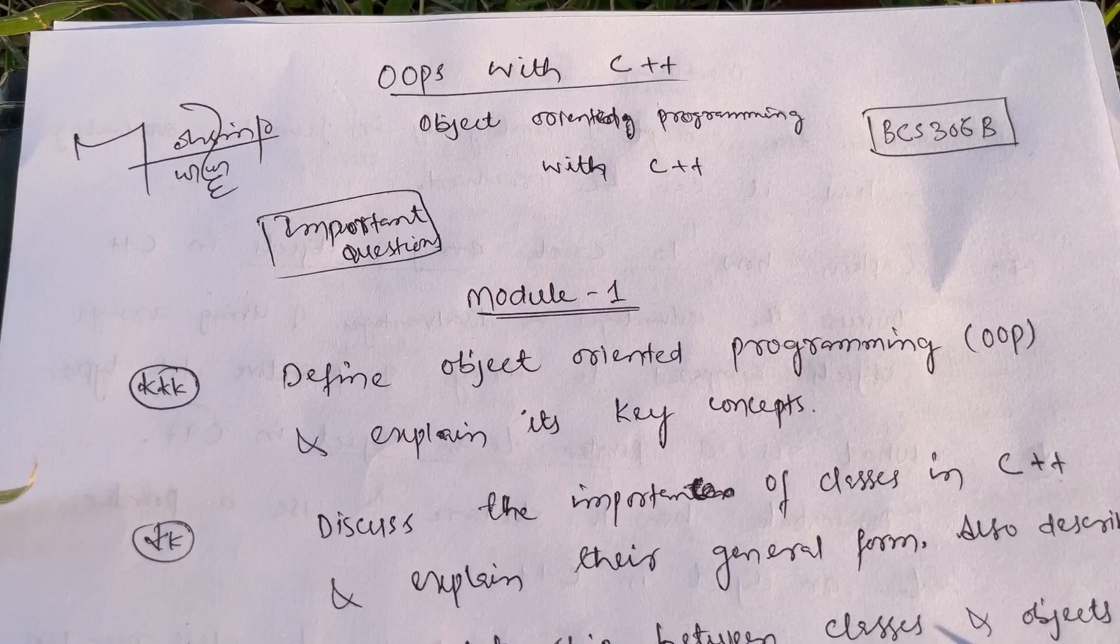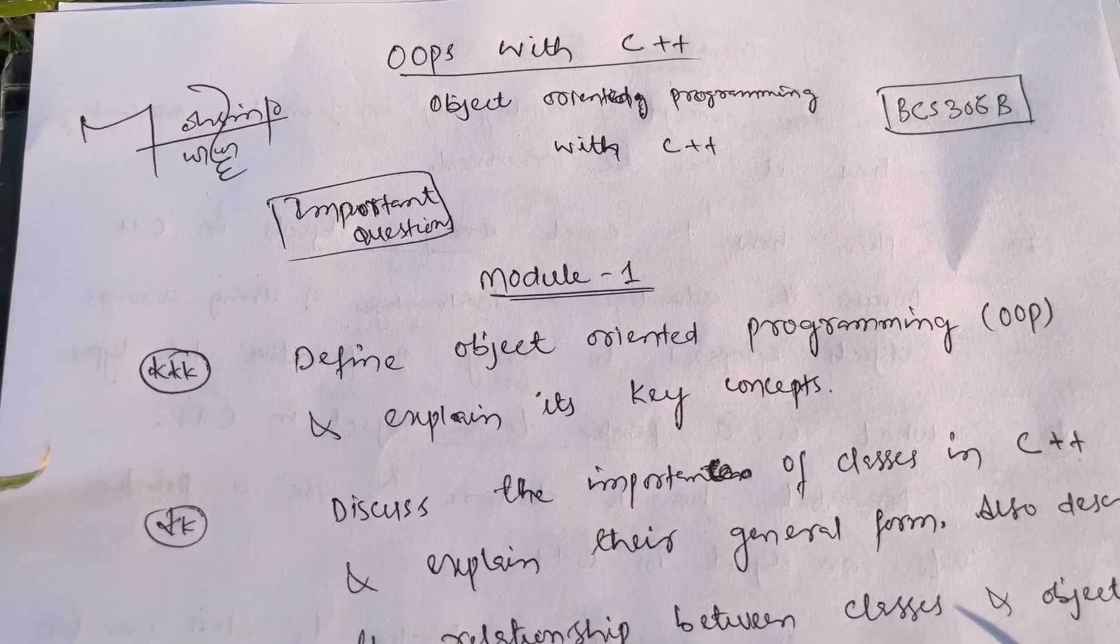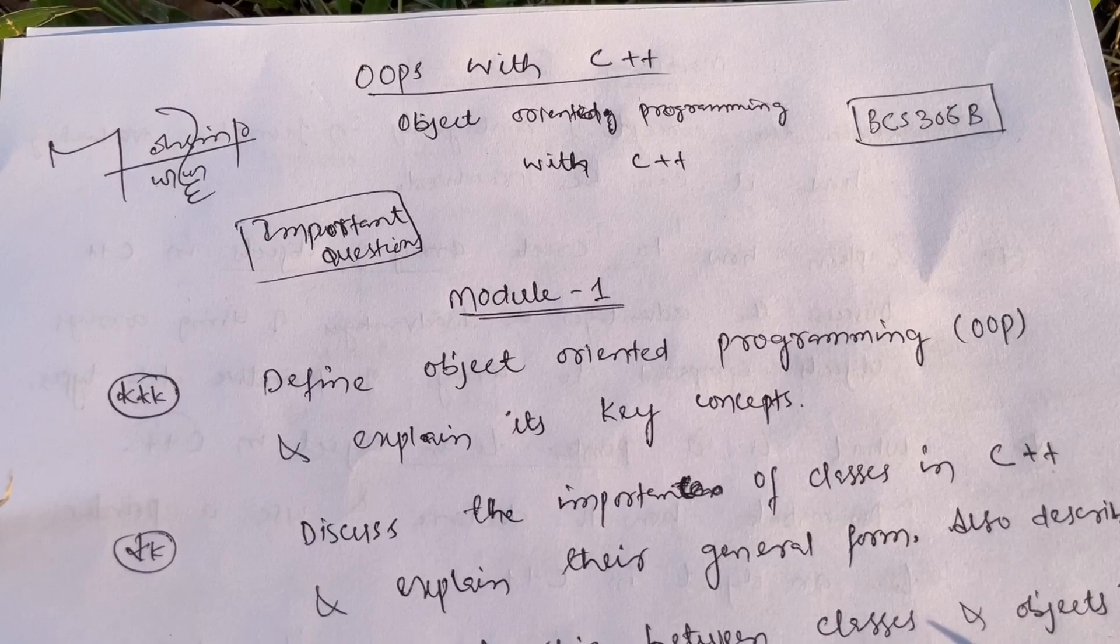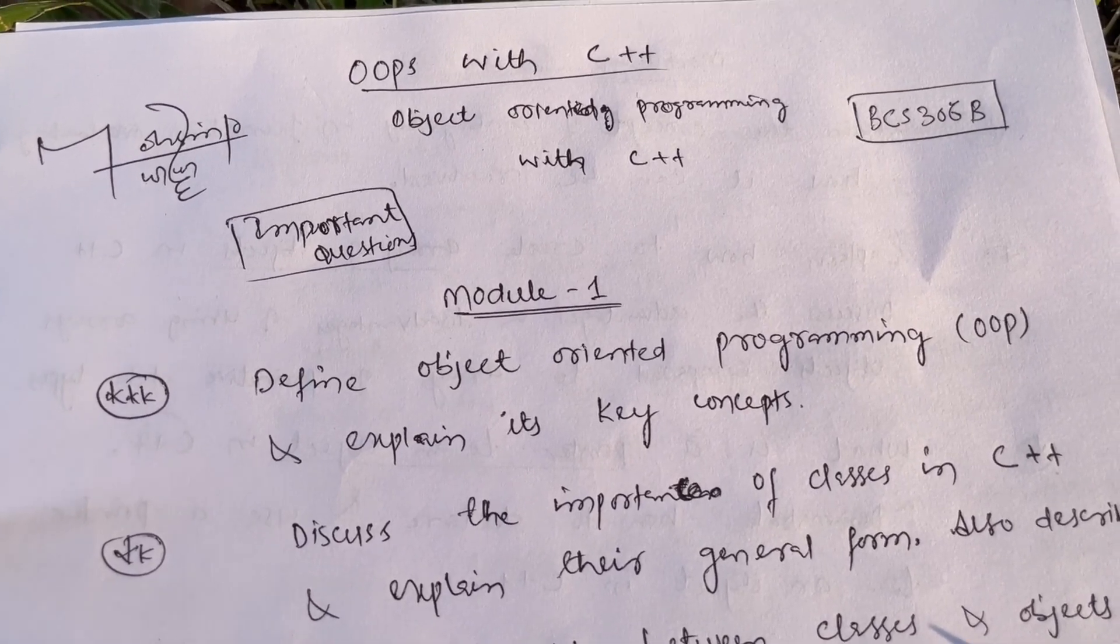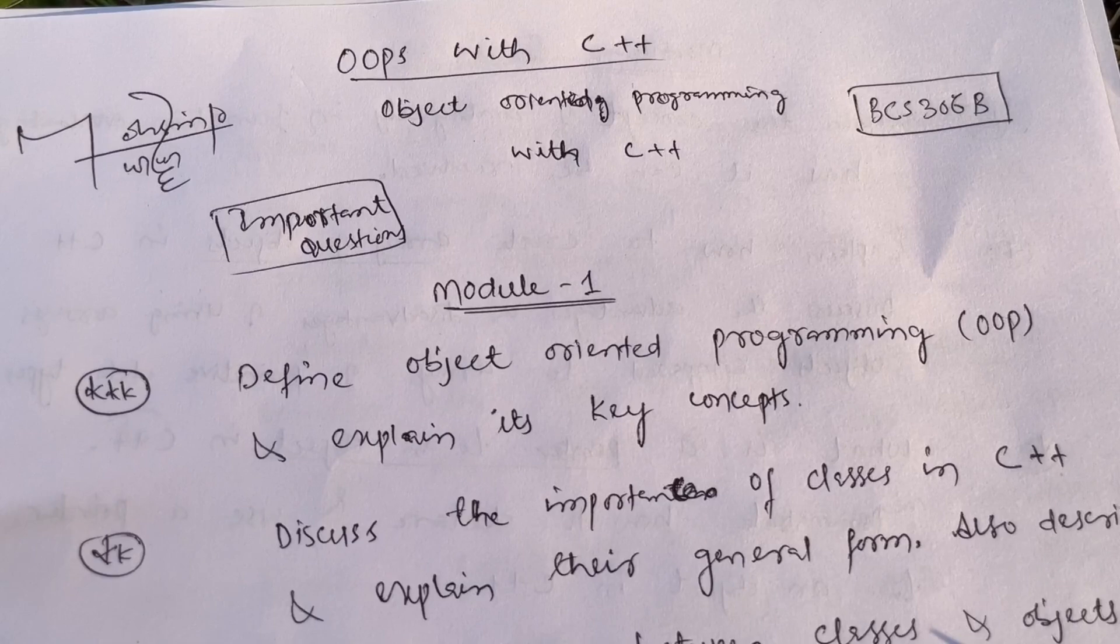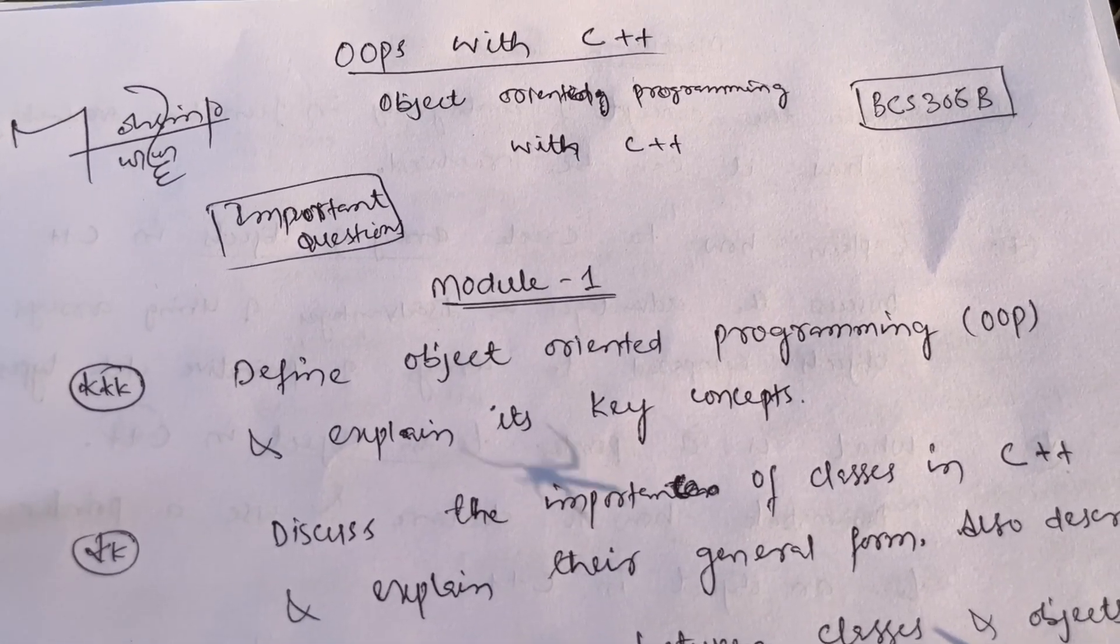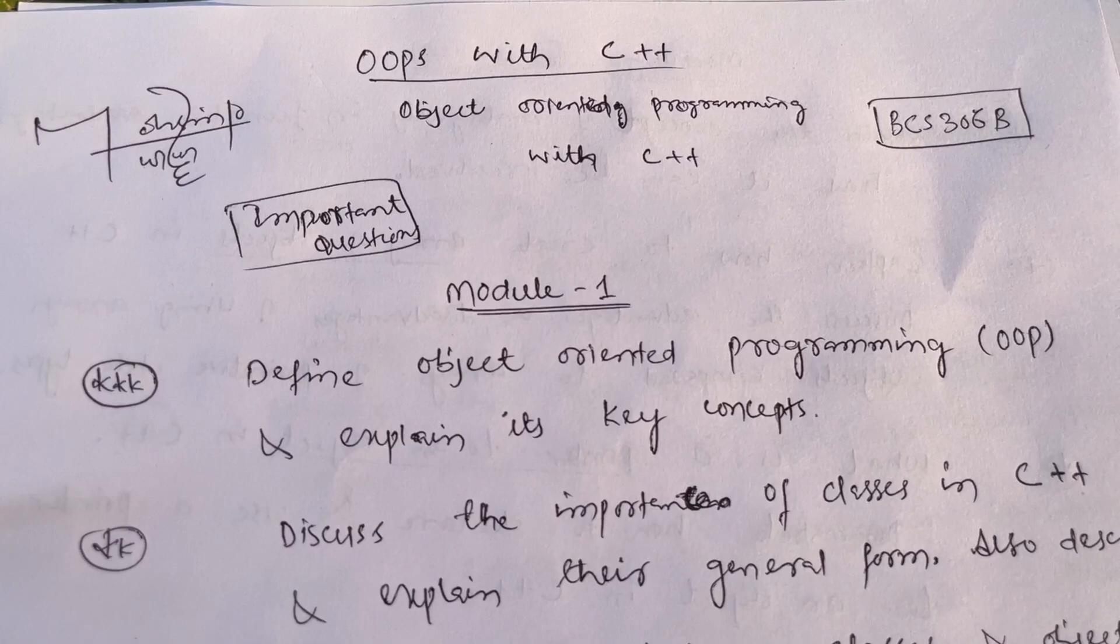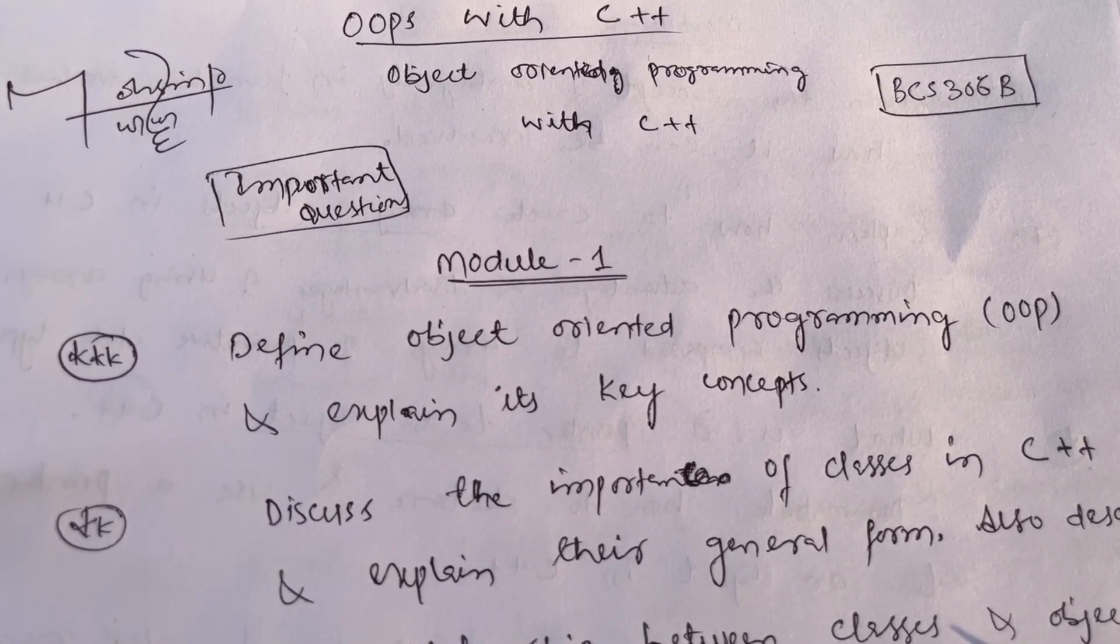Its subject code is BCS 306B. Let me tell you first, whatever the headings mentioned in your syllabus copy, there are a lot of concepts which are hidden inside those headings. So you should not leave anything at all. First priority should be you should have a hold on some topics which are hidden inside.